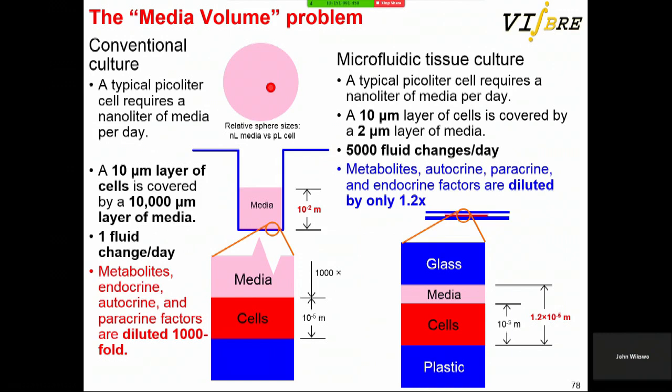In microfluidic tissue culture, you bring the lid down and still have the picoliter-nanoliter relationship, meaning you change fluid 5,000 times a day — more than you'd ask of a graduate student or technician. The bottom line is if you do this right, you can have very low dilutions of paracrine and other signaling factors.